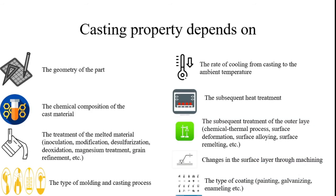Casting properties depend on: the geometry of the part to be produced, the chemical composition of the cast material, the treatment of the melted material, the type of moulding and casting processes, the rate of cooling from casting to ambient temperature, the subsequent heat treatment, the subsequent treatment of the outer layer, changes in the surface layer through machining, and the type of coatings such as painting, galvanizing, and enamelling.